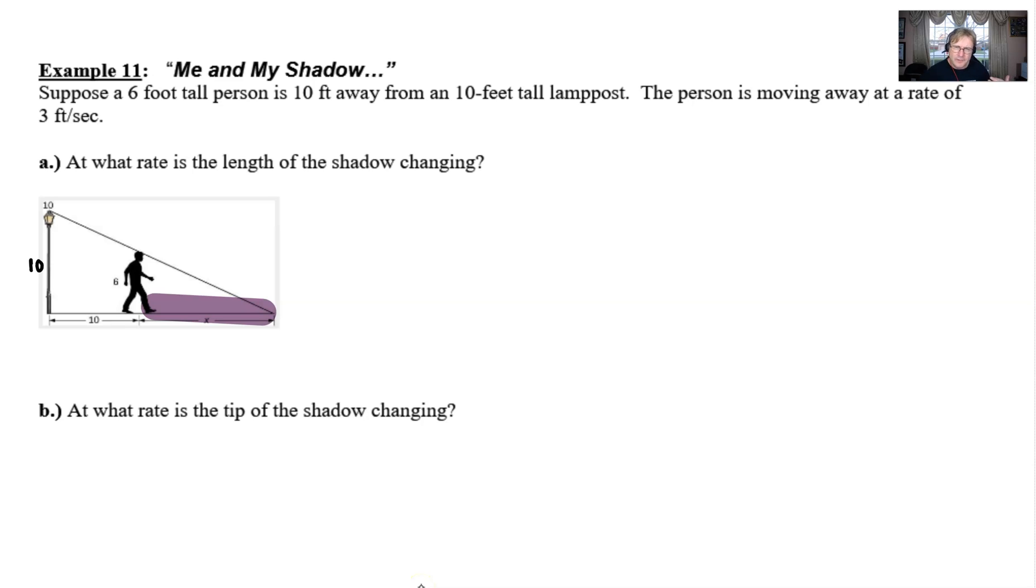We can always go back to our meat and potatoes where we can read or think about what is given in the problem. The given is typically going to be the rate, the rate of something that's changing. We see that the problem says the person is moving away at a rate of three feet per second. Now we have to think about that a little bit. The man is moving away at a rate of three feet per second.